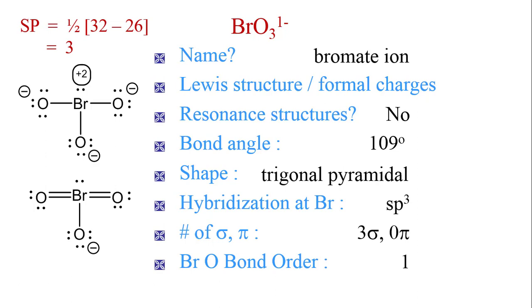Let's answer the same questions using the bottom structure. Of course, the name is still bromate ion. Are there resonance structures? Yes, the single bond could have been to the left oxygen or to the right oxygen, so there are three resonance structures.